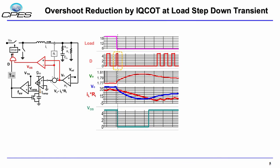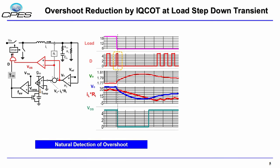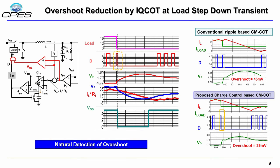Let's see how this proposed control can reduce the overshoot at the load step-down transient. Whenever the load step-down occurs at the beginning of T-on, Vc crosses the inductor current, and we can generate a logic signal from that crossing to truncate the on-time immediately, which can eventually reduce the overshoot. As shown on the right side, by using this logic we can reduce the overshoot by 20 millivolts.